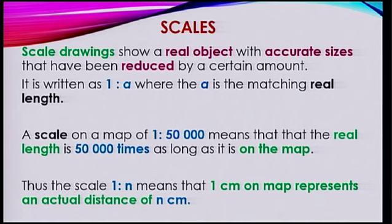Generally we have a scale of 1 is to N. It means that 1 cm on a map represents an actual distance of N cm.